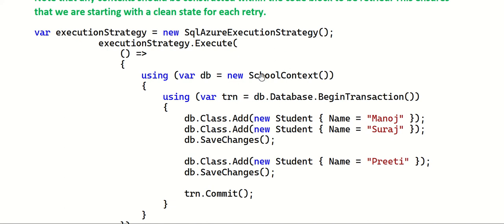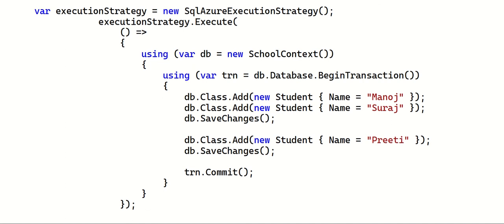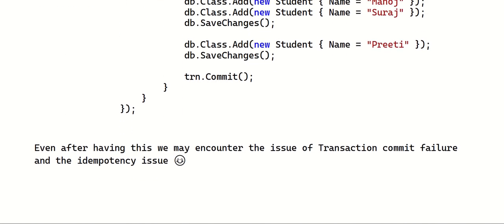Those two lines will automatically construct the appropriate strategy for you. Once you ensure that all DB operations associated with your transaction are inside a using block, retrying will be enabled using the enabled retry mechanism, and you can also execute user transactions.